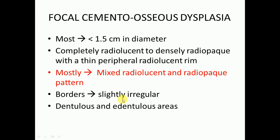Focal cemento-osseous dysplasia is mostly asymptomatic and can be diagnosed on routine radiographic examination. Most lesions are less than 1.5 centimeters in diameter. Radiographically they are initially radiolucent, but with time they mature and are converted into a mixed appearance and then into a radiopaque lesion. The borders are slightly irregular.